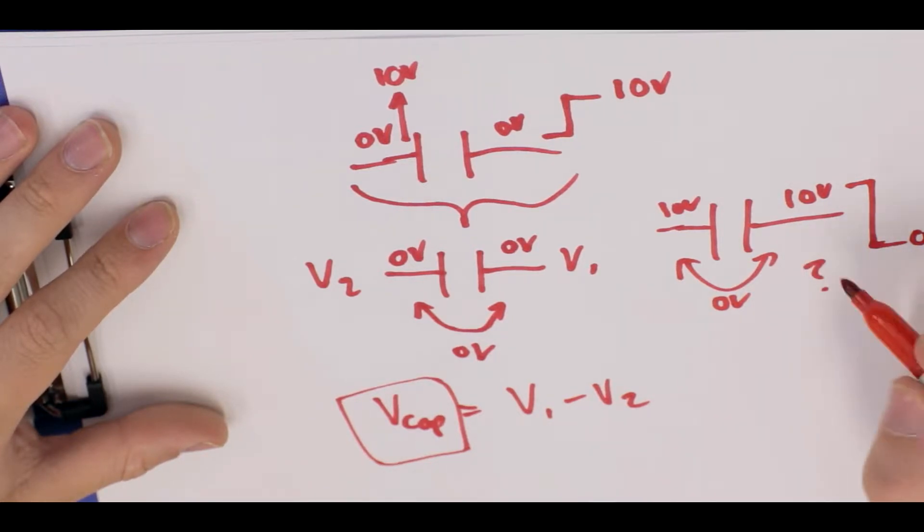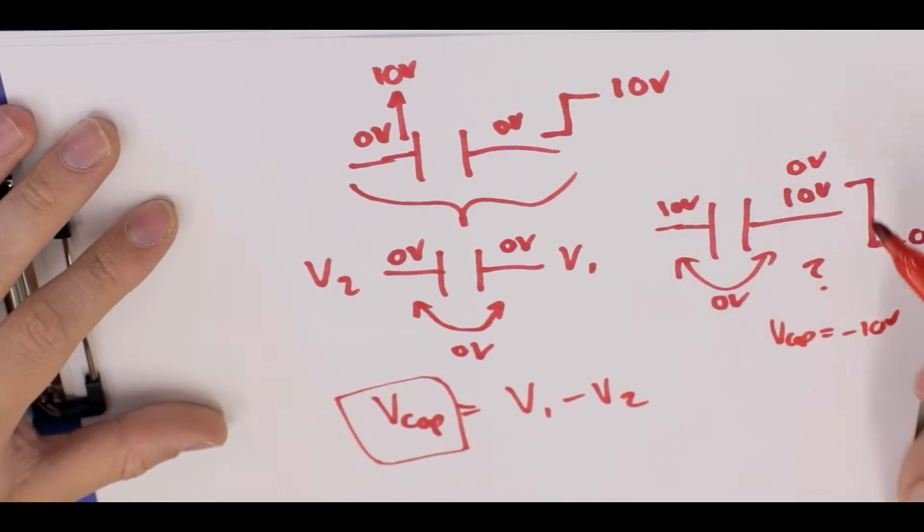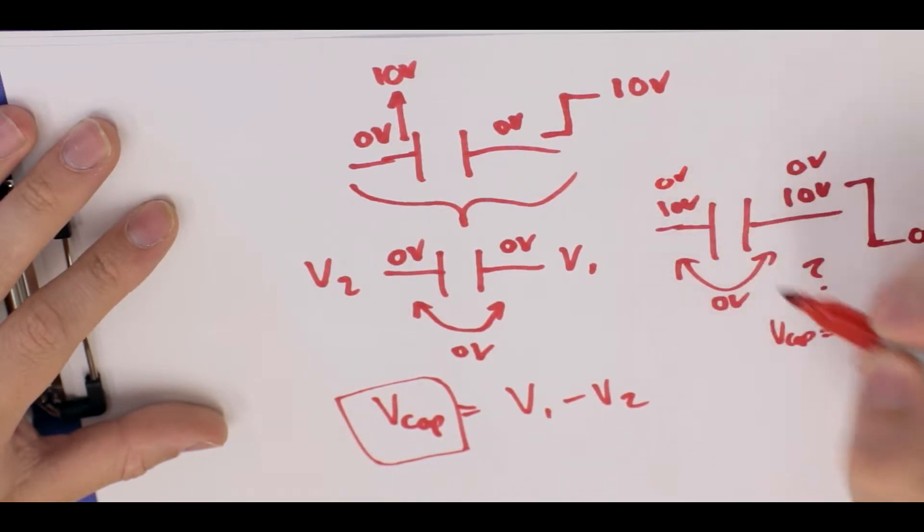Well, if we bring this down to 10 volts and this side becomes zero volts, okay? And V_cap is now zero minus 10, which is minus 10 volts. So therefore it will bring this one down to zero volts as well to maintain the same voltage across it of zero volts. So it goes to zero volts.